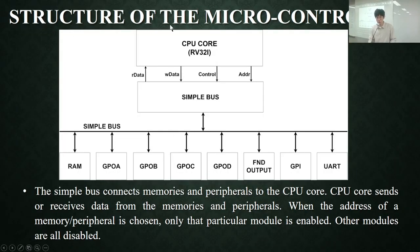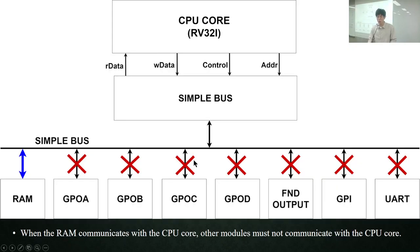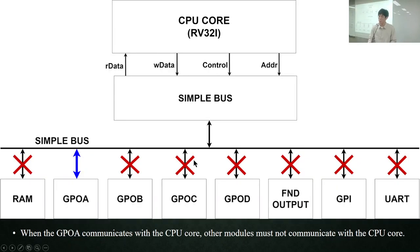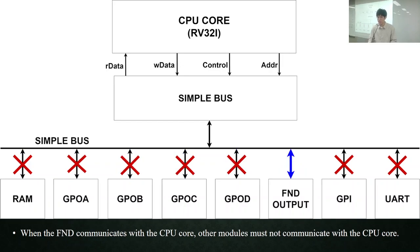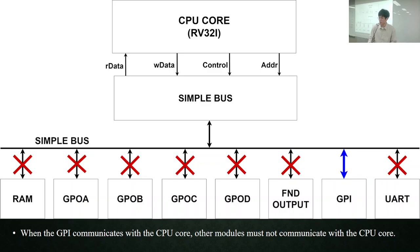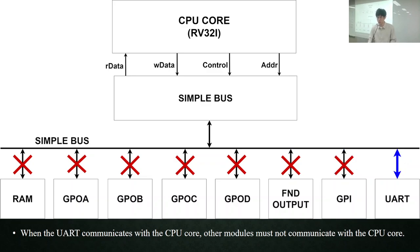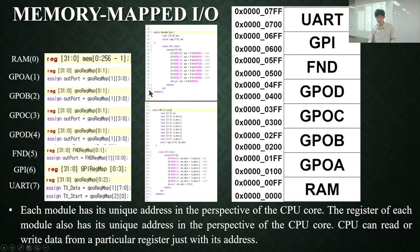This is the structure of the microcontroller. The CPU core is connected to the memory and the peripherals through the bus. Through the bus, the CPU core can read or write data to memory or peripherals. But we have to note that only one memory or peripheral can communicate with the CPU core. That means that other peripherals must not be communicating with the CPU core. And for this, a decoder and the multiplexer is used.